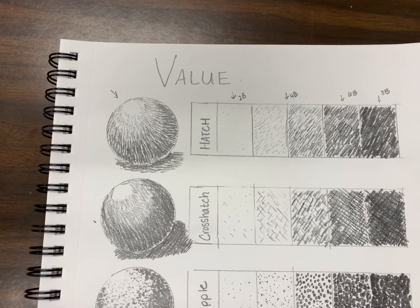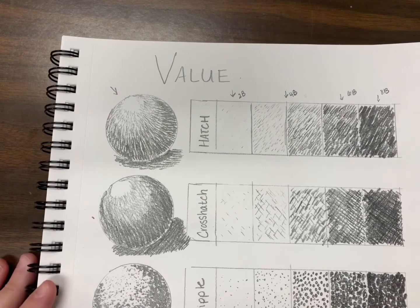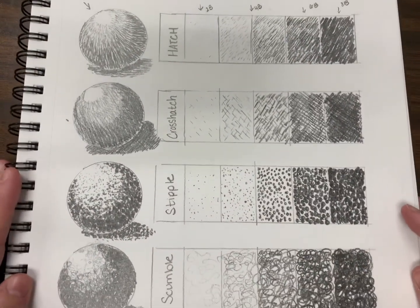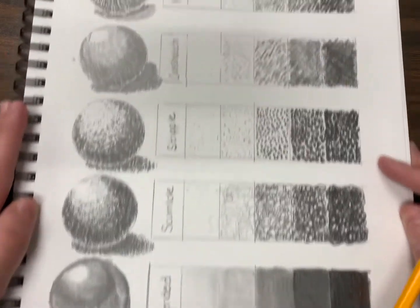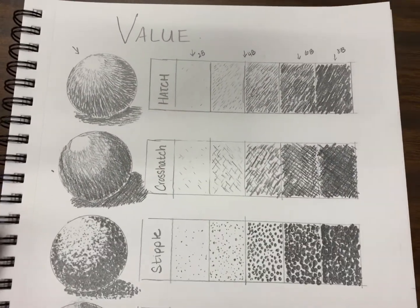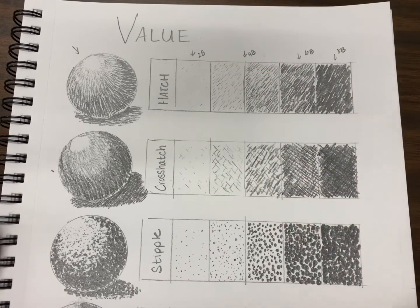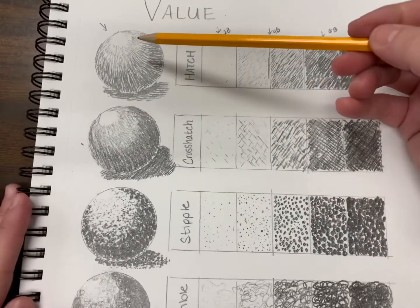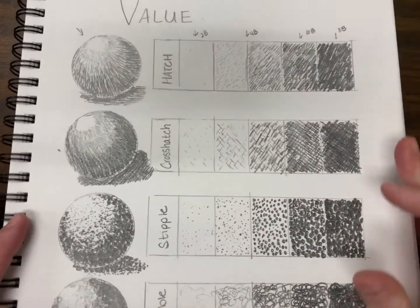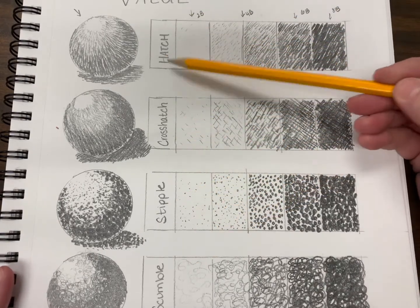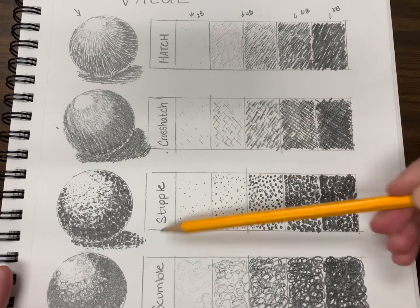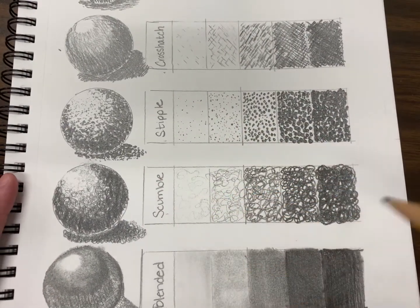So I just wanted to talk a little bit about the technique now that I have finished my drawing assignment, the practice with applying value. I have my five value scales and my five spheres. Each one has a different mark: hatch, crosshatch, stipple, scumble, and blended.